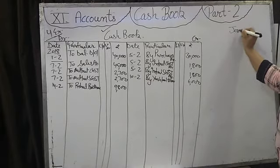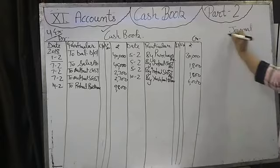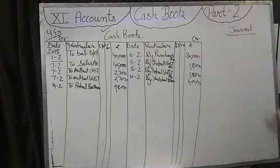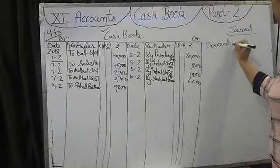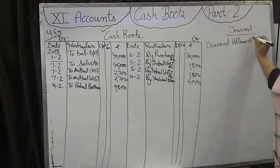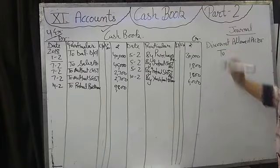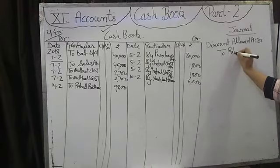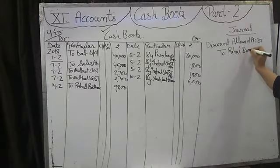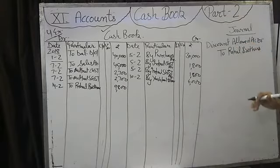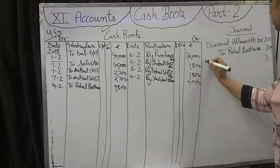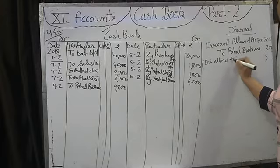In your book you have to make the proforma for the journal entry. In narration you will write: discount allowed to Rahul Brothers.